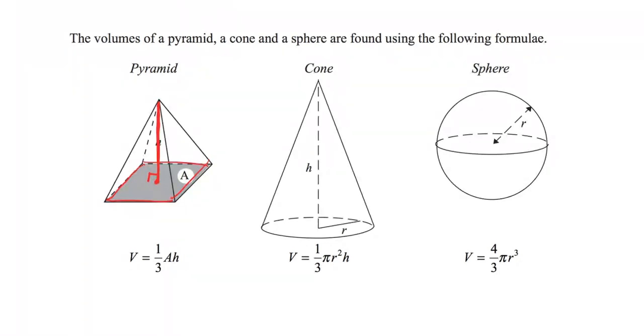In the case of the cone, it is very similar. It is a third times that perpendicular height again, but it's the area. We already know the area this time - it's pi r squared. So that has been inserted into that formula. It's very similar to a pyramid.